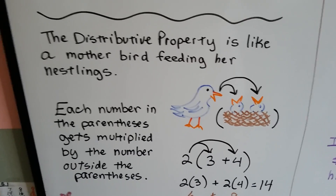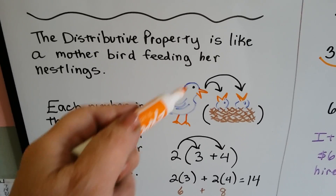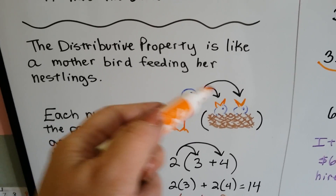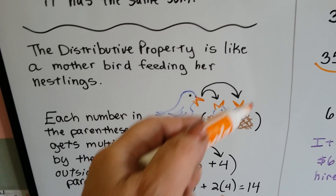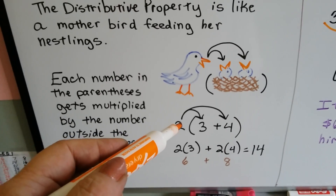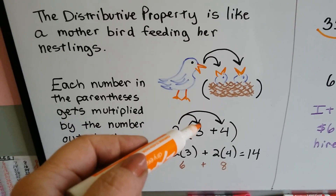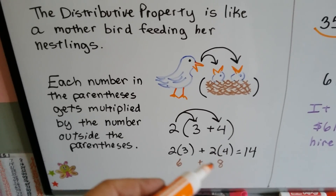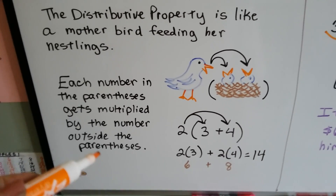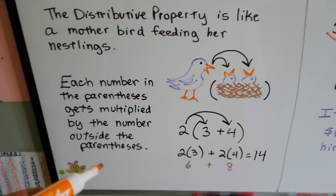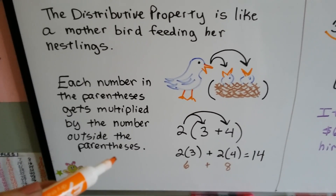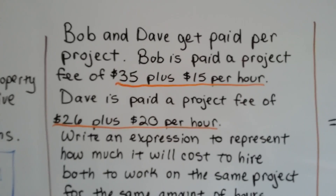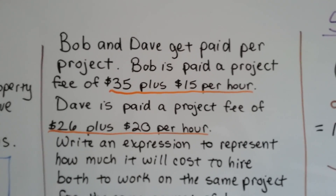The distributive property is like a mother bird feeding her nestlings — she feeds the first one and then the second one; she has to make sure she goes to each one so no one starves. So it'd be like two multiplied by three, and then we add that to two multiplied by four, giving us six plus eight, which is fourteen. Each number in the parentheses gets multiplied by the number outside the parentheses.